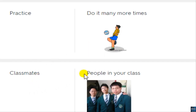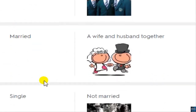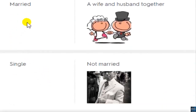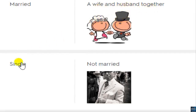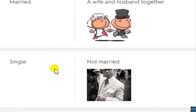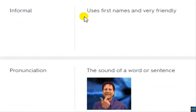Classmates — people in your class. Married — a wife and husband together. Single — not married. Informal — he uses first names and is very friendly.